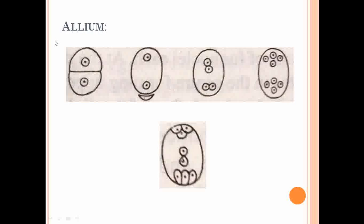The active megaspore undergoes transverse division to form the dyad. The cell at the chalazal end degenerates, and the binucleate stage undergoes further nuclear division to form the tetranucleate stage. This tetranucleate stage undergoes one more nuclear division to form the 8-nucleate stage. There is a normal embryo sac arrangement: three cells at the micropyle function as the egg apparatus, three cells at the chalazal end function as antipodal cells, and one nucleus from micropyle and one from chalaza move to the center forming the secondary nucleus.